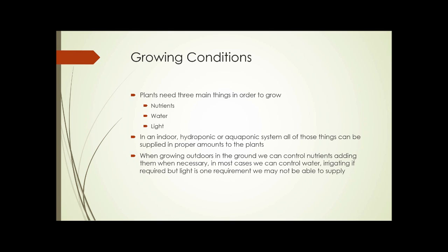Unit 8 Part 2: growing conditions. The first part of this unit dealt with land availability and some possible issues with land availability in urban areas. Now we're going to deal with growing conditions. Plants need three main things in order to grow: nutrients, water, and light. In an indoor hydroponic or aquaponic system all of these things can be supplied in the proper amounts, depending on the expense one is willing to go through. When growing outdoors in the ground, we can control nutrients by adding them when necessary, and in most cases we can control water by irrigating if required, but light is one requirement that we might not be able to supply.